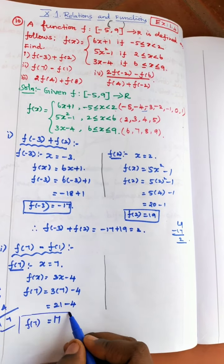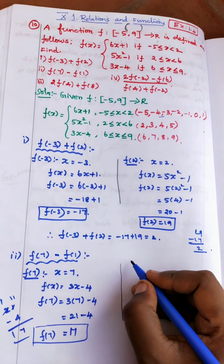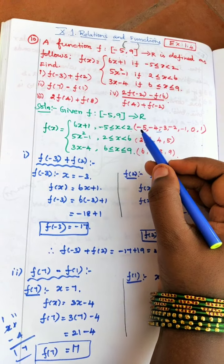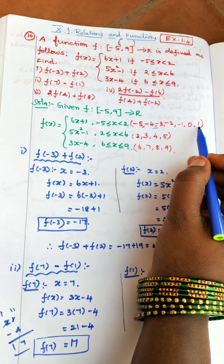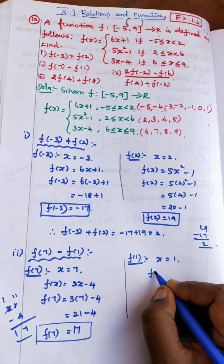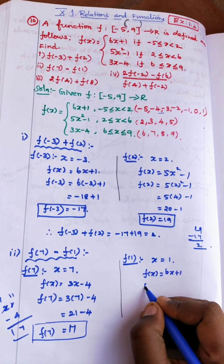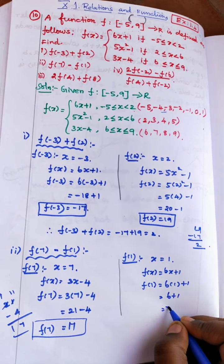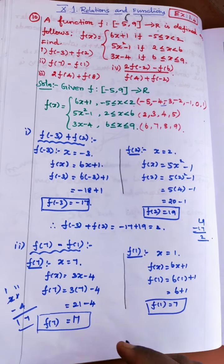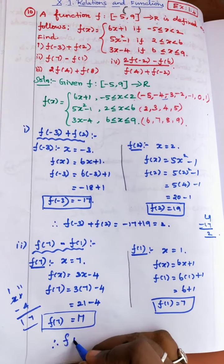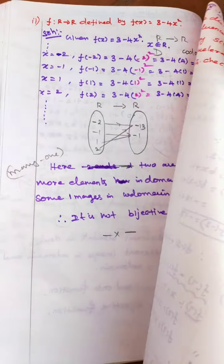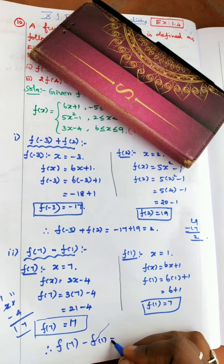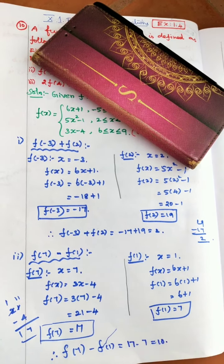Next, find f(1). Here x = 1 lies in the first interval. So f(x) = 6x + 1. Substitute x = 1: f(1) = 6 × 1 + 1 = 6 + 1 = 7. Therefore f(7) - f(1) = 17 - 7 = 10.